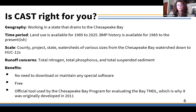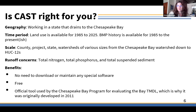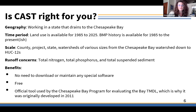The benefit is that you don't need to download or maintain any special software — you just need an internet connection and can go to the website. It's free. It is the official tool used by the Chesapeake Bay Program for evaluating the Bay TMDL. That was why it was originally developed — for the Chesapeake Bay TMDL. EPA established that TMDL in 2010 covering the entire 64,000 square miles of the drainage area, and we established this tool in 2011 to help people determine what they could do to reduce loads to the Bay.